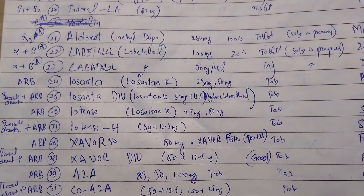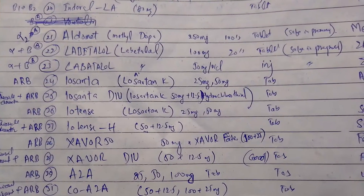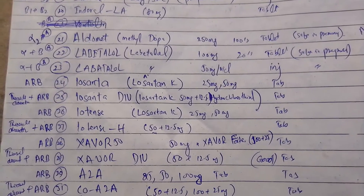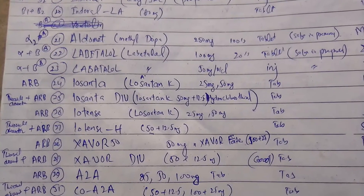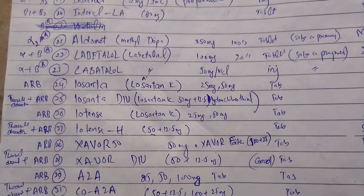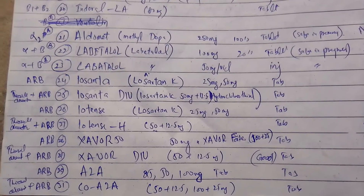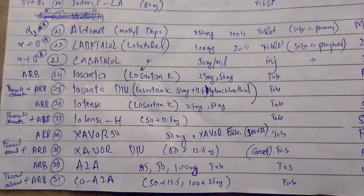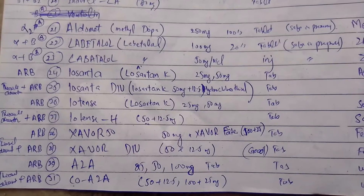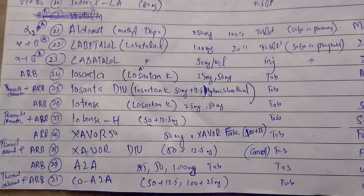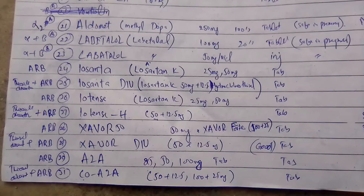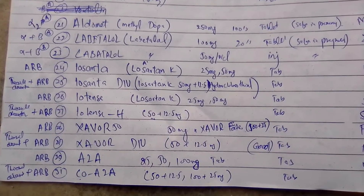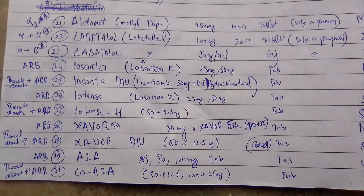Leucetan DUO contains two drugs: losartan potassium, which is an angiotensin receptor blocker, and hydrochlorothiazide, which is a thiazide diuretic. Low Tens contains losartan potassium 25 mg. Leucetan H is a combination of losartan potassium and hydrochlorothiazide.